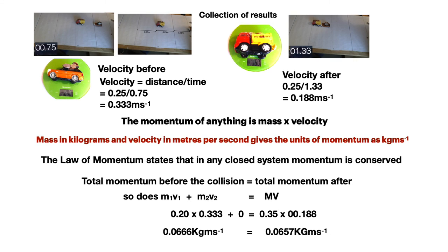That gives us 0.0666 equals 0.0657, which it clearly doesn't, but it's very close—which is not bad considering the basic equipment we used. So we'll give ourselves a big self-satisfied tick, confident that the law is soundly based.